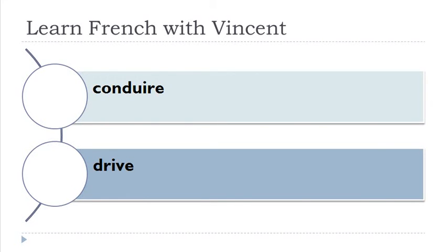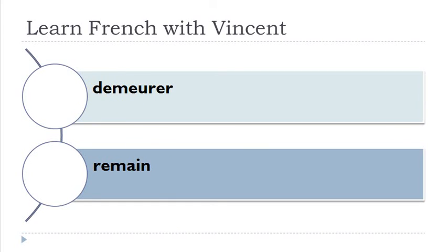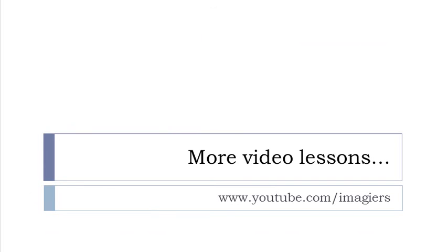Conduire. Remember 'u' — 'du', 'duire' — conduire. Conduire. Saisir. When you combine 'a' and 'i' you get the sound 'ai'. Saisir.